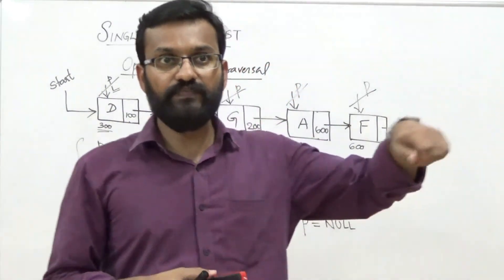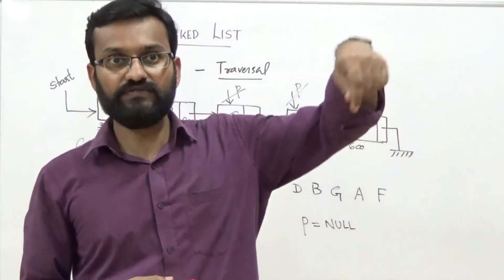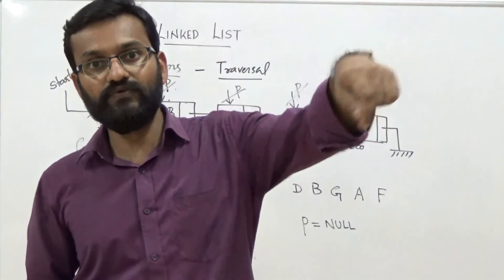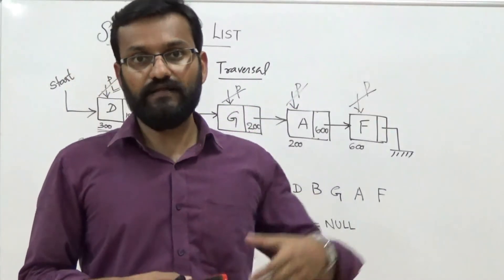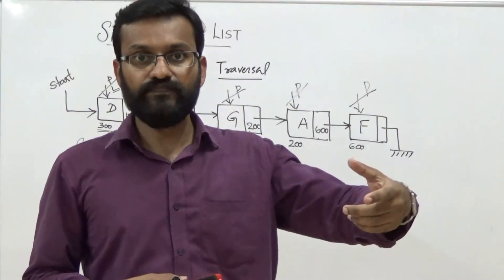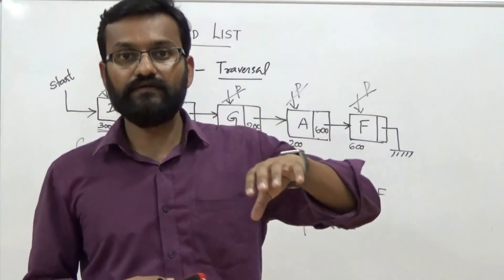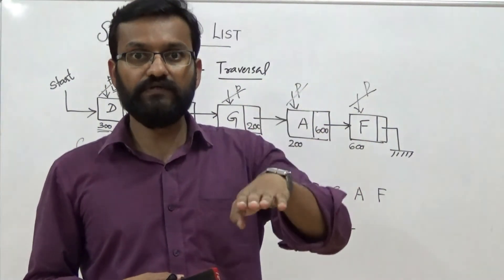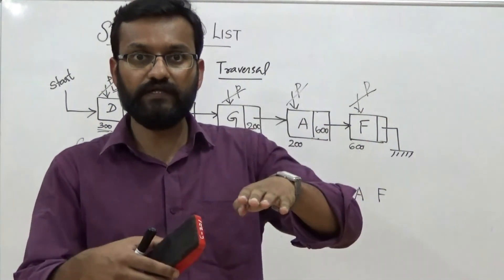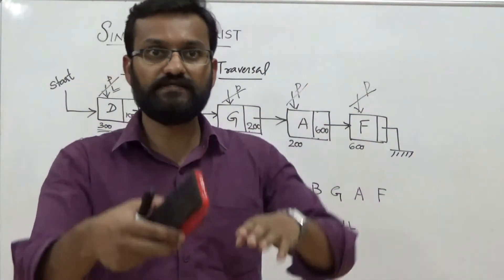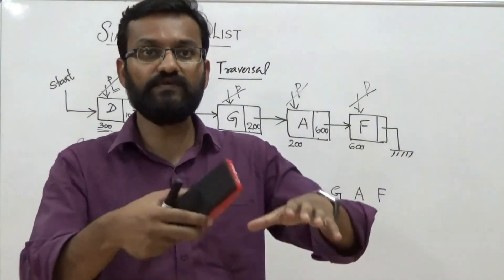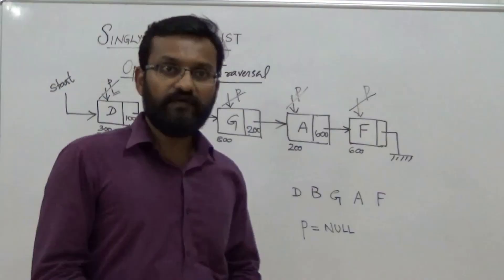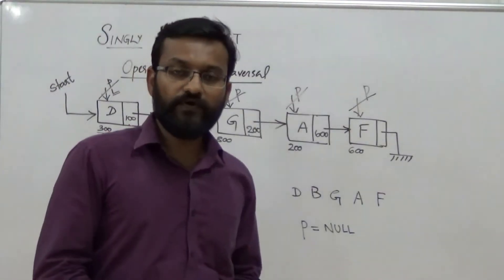Otherwise, take pointer P, make it point to the start node, then iterate until you reach the last node. During each iteration, display the content stored in the node, followed by shifting the pointer to its successor node. This process repeats until P becomes equal to None.